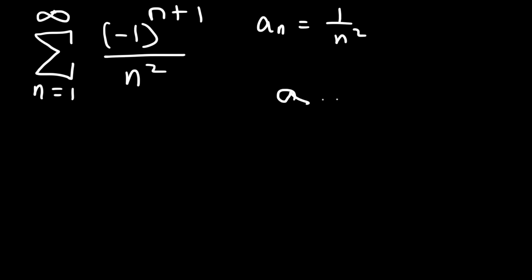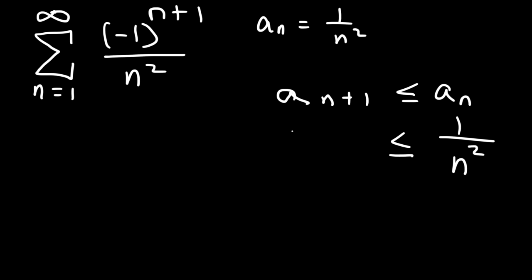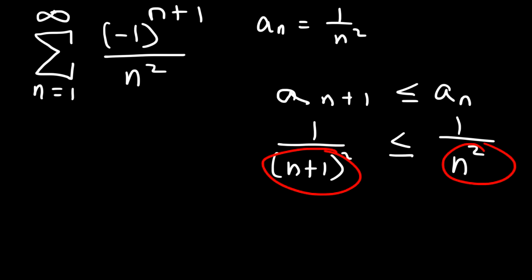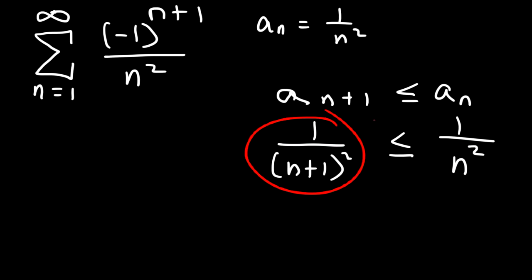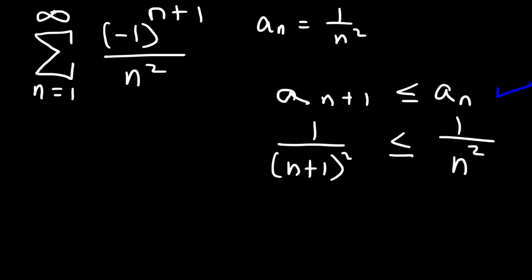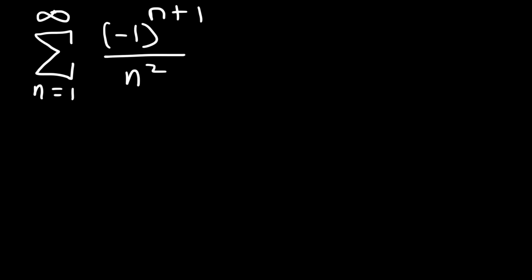Now let's make sure it's a decreasing sequence. Let's show that a sub n plus 1 is less than a sub n. So a sub n is 1 over n squared, which means a sub n plus 1 is 1 over n plus 1 squared. Because the denominator of this fraction is greater than the denominator of the other fraction, this entire fraction is less than that fraction. So we do have a decreasing sequence, which means the series is convergent.